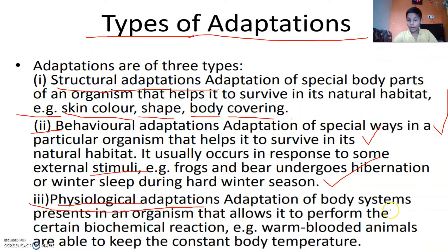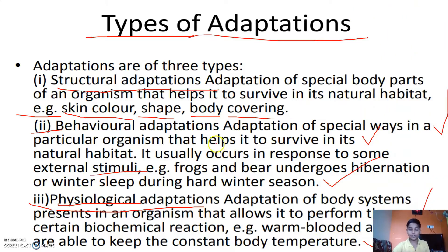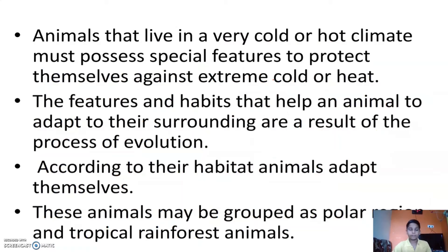The third type of adaptation is physiological adaptation — an adaptation of the body system present in an organism that allows it to perform certain biochemical reactions. An example is warm-blooded animals that are able to keep a constant body temperature.